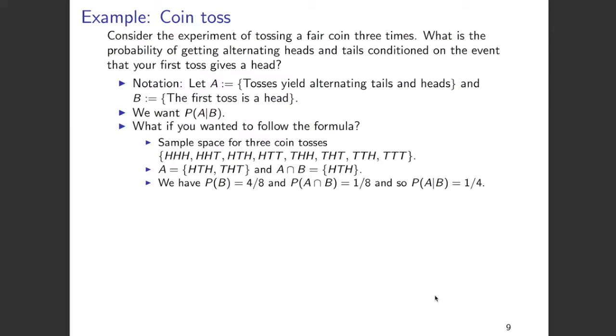What is the probability of A given B? Using the formula, probability of A given B equals probability of A intersection B divided by probability of B. What we have is 1 over 8 divided by 4 over 8, which gives us 1 over 4.